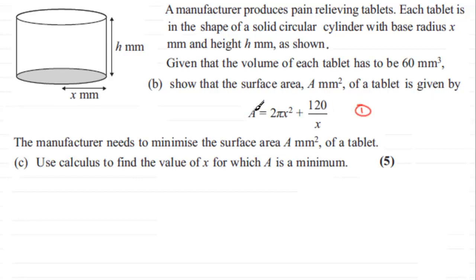So if we're going to differentiate it, this term here isn't in the right form. We need to think of this as 120 times 1 over x which can be written, the 1 over x can be written as x to the power minus 1. So we end up with 120 times x to the power minus 1.